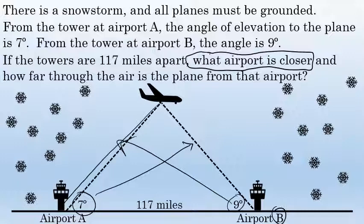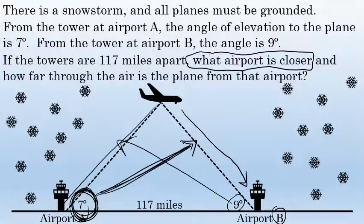So the smallest distance the plane would travel is opposite the smaller 7-degree angle. The airplane's distance to Airport B is opposite this smallest angle, so Airport B is closer.